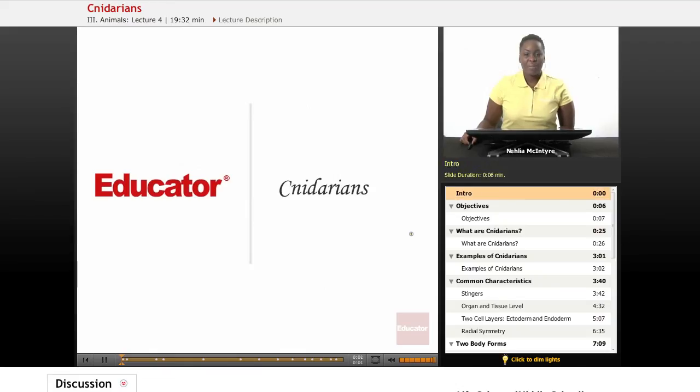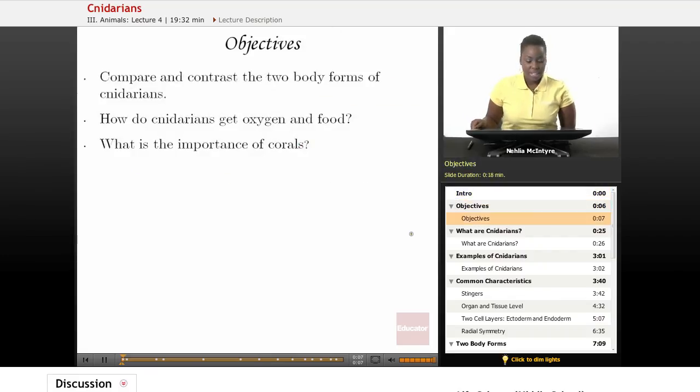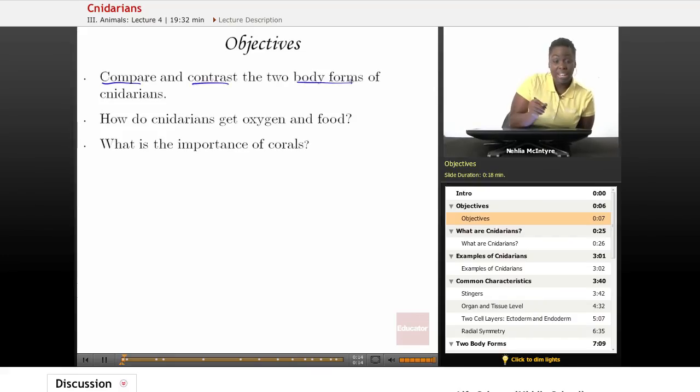Welcome back to Educator.com. This is the Life Science Course, and today's lesson is on Cnidarians. Today's objectives will be: number one, compare and contrast the two body forms of Cnidarians. Number two, how do Cnidarians get oxygen and food? And number three, what is the importance of corals?